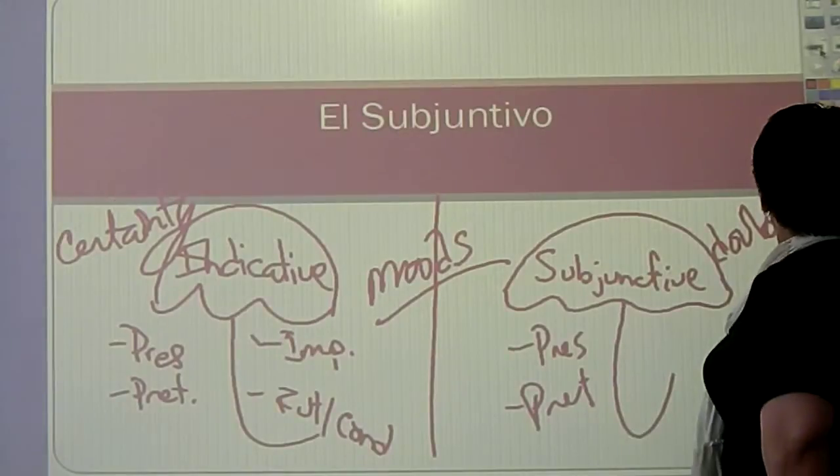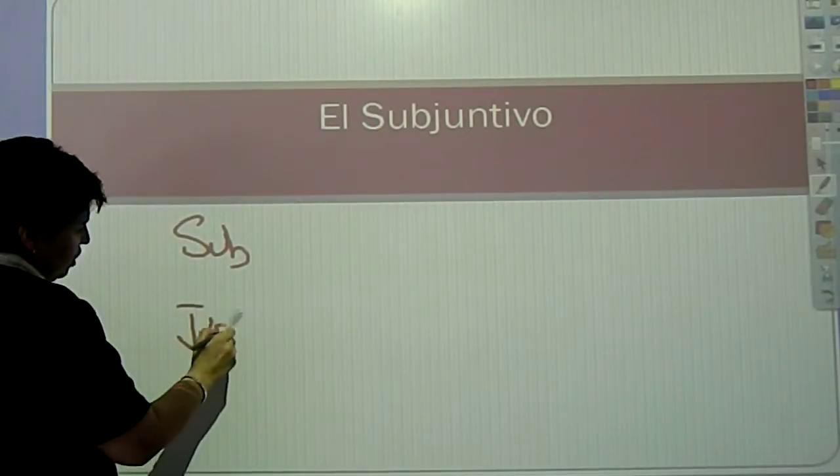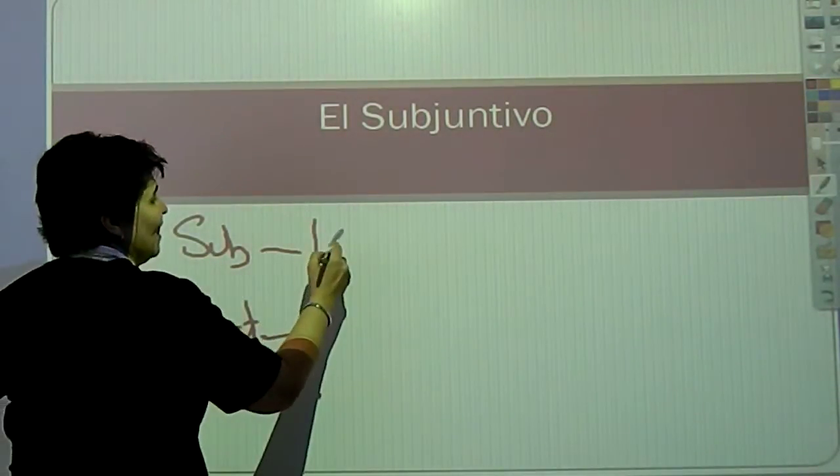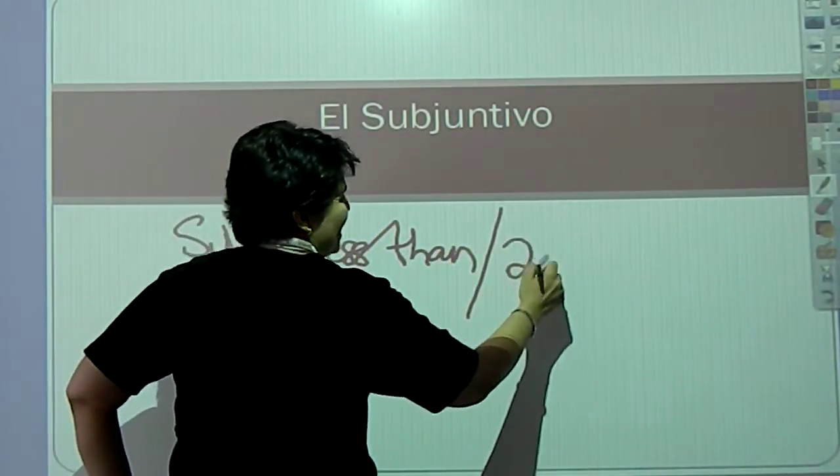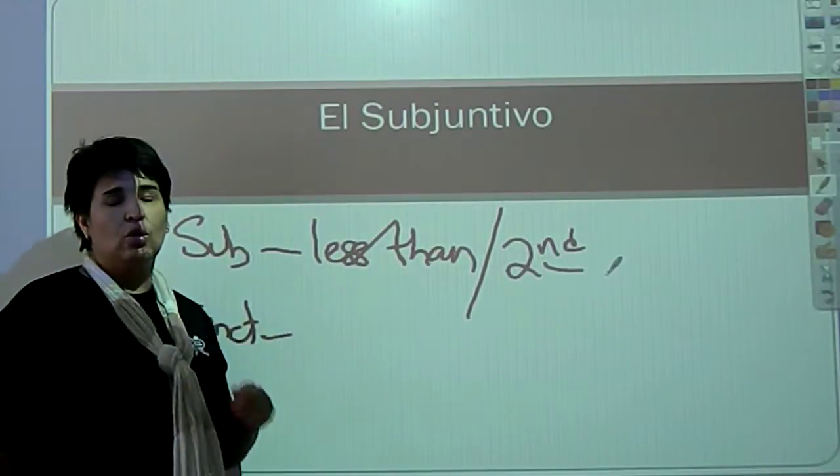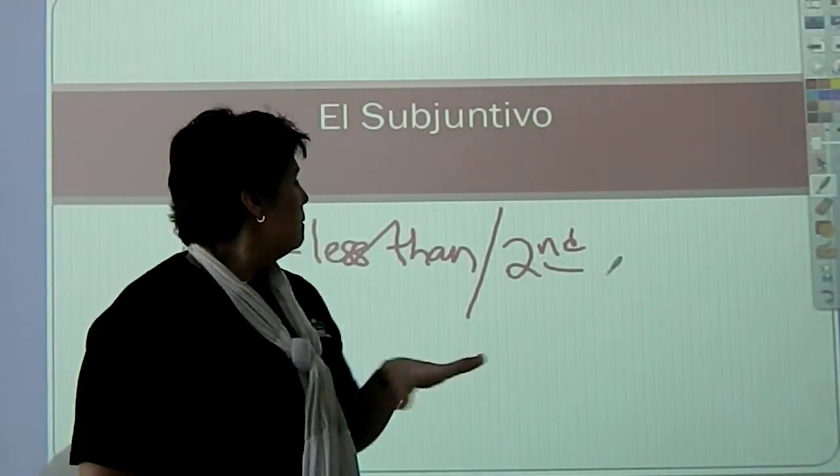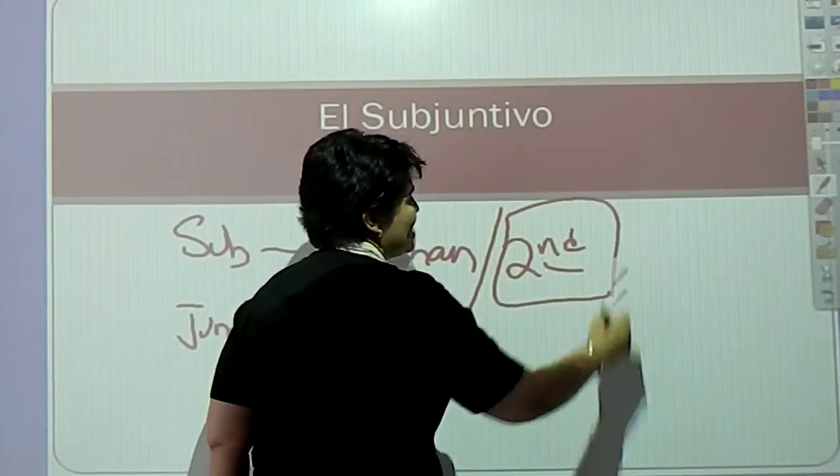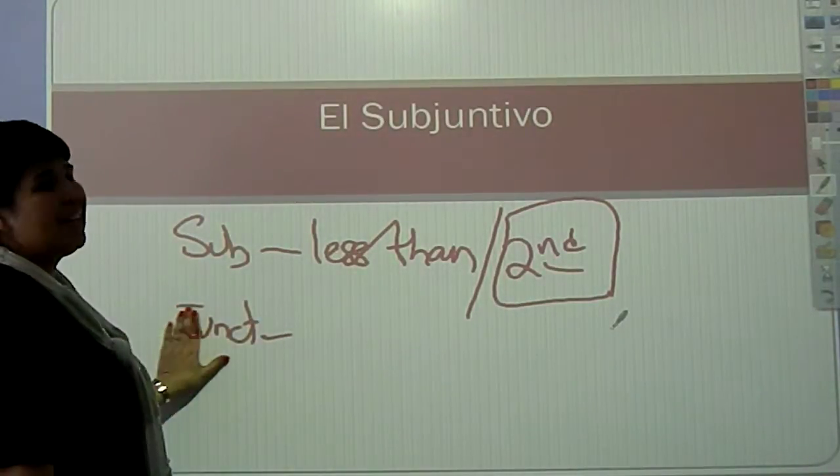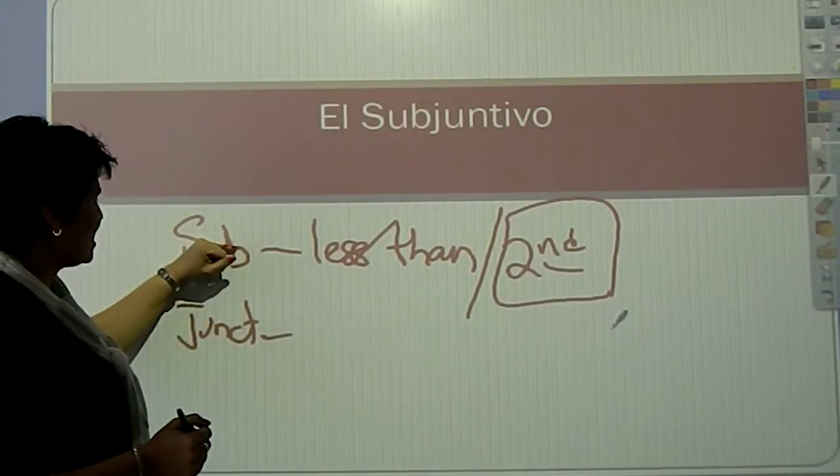First, if you go to the word sub, and then junction, that alone gives you a complete understanding of what subjunctive is. Sub means that it is less than. Means that it is second in line. Which means that the subjunctive conjugations can never, ever, ever stand alone. You need to have indicative, and then subjunctive. Subjunctive will always be the second verb in line. It has to be joined to another verb. Has to be. It has to be joined, and it has to be second. Never first.